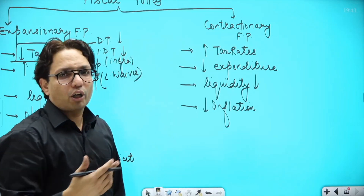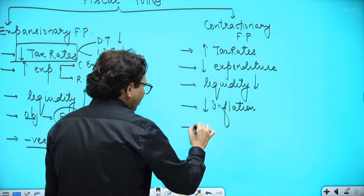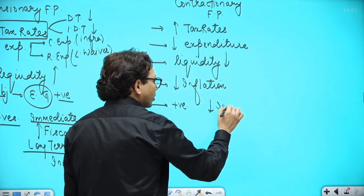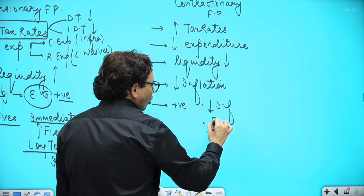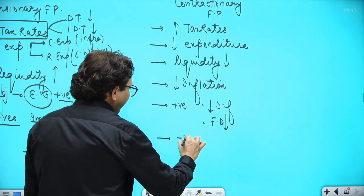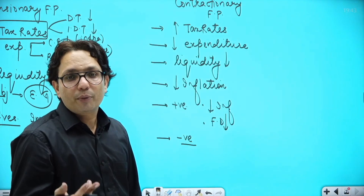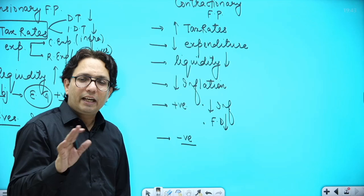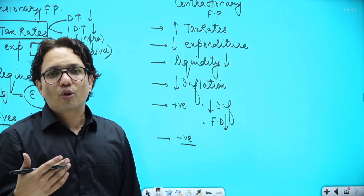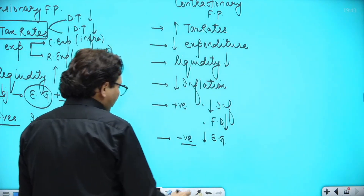The objective of following contractionary fiscal policy is to bring down inflation. The positives are: inflation goes down and the government's fiscal deficit also reduces. The negative is that the reduced liquidity would also lead to a decrease in economic growth. So in contractionary fiscal policy, we aim to control inflation, but that comes at the cost of decreased economic growth.